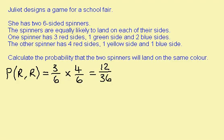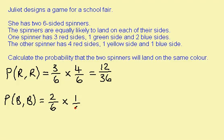The second way that I could get two of the same colour would be to get a blue and a blue. So the probability of getting a blue and a blue: a blue on the first spinner is 2 out of 6, and a blue on the second spinner is 1 out of 6. So I have 2 out of 36.